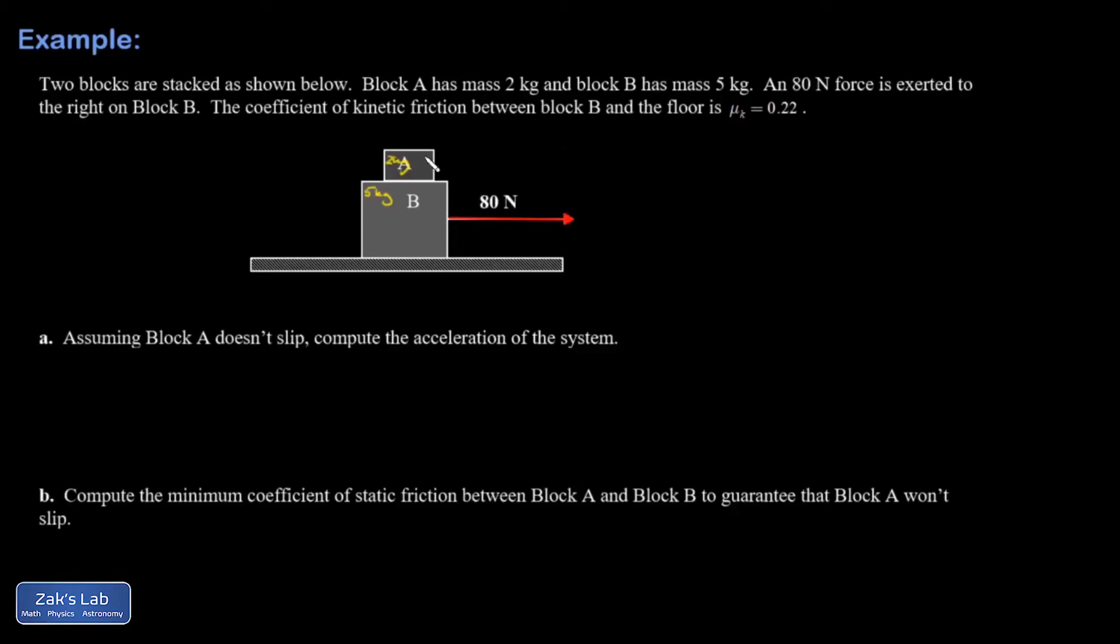Alright, here we have a block-on-block problem. So I have a 2-kilogram block on the top, 5 kilograms underneath, 80-newton force pulling to the right on that bottom block. And then I have a coefficient of kinetic friction between block B and the floor as 0.22. So I'm going to try to write that in. I kind of like to write it like that. So I have μk equals 0.22.